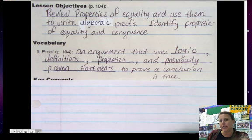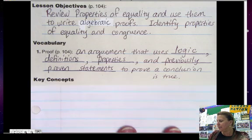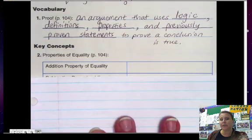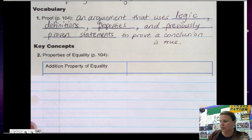And usually we'll do what's called two column proofs. We're going to do an example of that in today's lesson. So our algebraic properties are down here and they're ones that you have been introduced to before in years past. So this should look pretty simple to you.